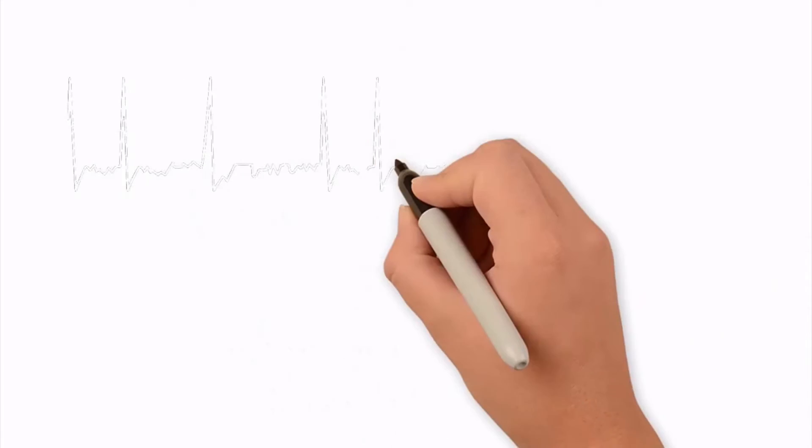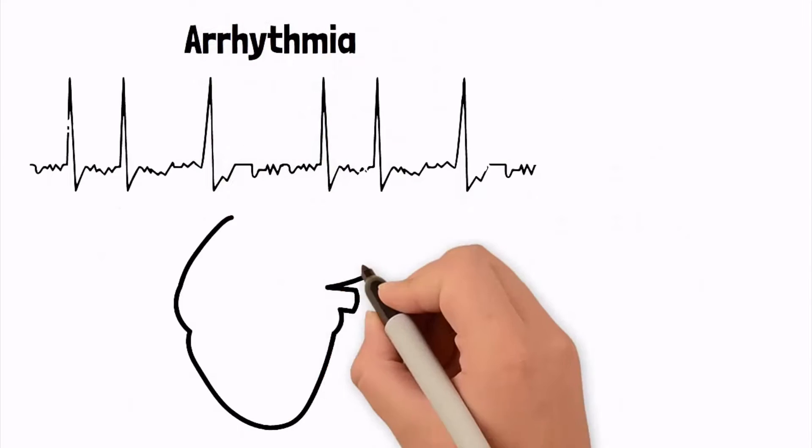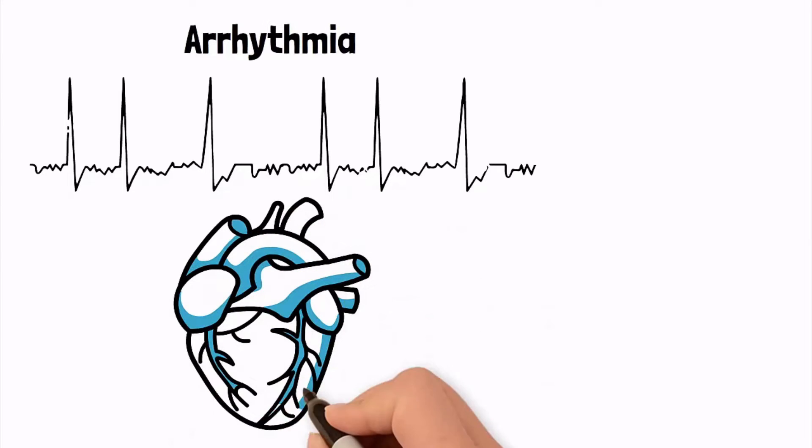But when a patient has a cardiac rhythm disorder known as an arrhythmia, the electrical signals do not spread throughout the heart muscle as they should, which results in heart condition.